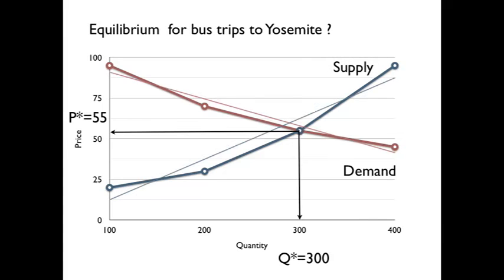But if we use our linear approximations — our algebra — with smooth lines fit between the data points, we would get numbers a little bit different. We'll come back and solve this later. What's the price if we use these algebraic lines? We'll go a little bit higher in price and down a little in quantity.